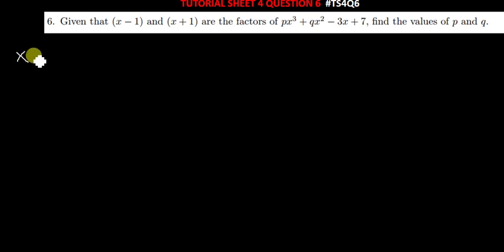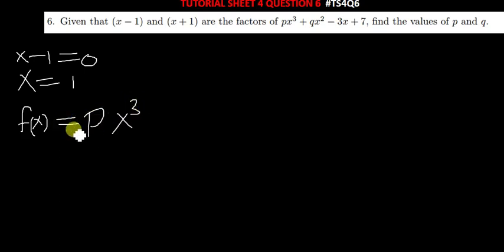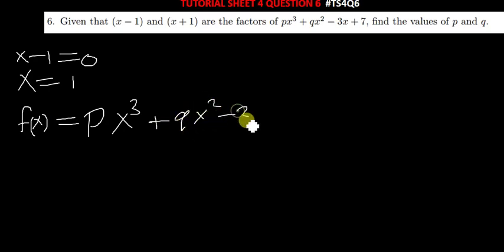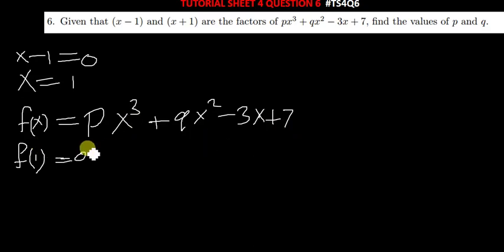x minus 1 is equal to 0, so x is equal to 1. We take this function — let's call it f of x — which is equal to px cubed plus qx squared minus 3x plus 7. What you do is find f of 1, and f of 1 should give us 0, since we've been told it's a factor. If it's a factor, the remainder is going to be 0, so after replacing x with 1 in this function, we're supposed to get 0.